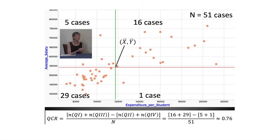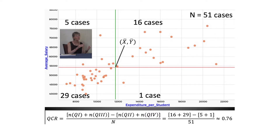Once they've divided the scatter plot into four regions, if they are noticing a positive trend, count all the points that are in quadrant one and quadrant three, then subtract the number of points in quadrant two and quadrant four, and then divide by the total number of points. The QCR will always be between negative one and positive one. If most points are in quadrants one and three, the QCR will be positive and close to one. If they're mostly in quadrants two or four, it will be negative and close to negative one. If the points are randomly scattered in all four quadrants, the ratio will be close to zero.